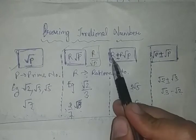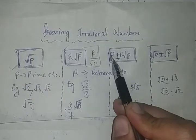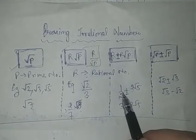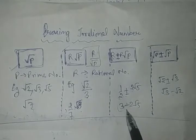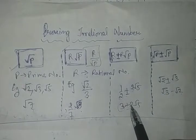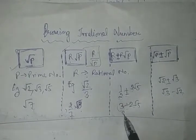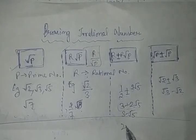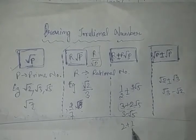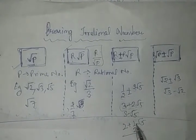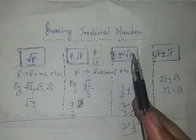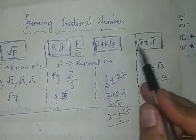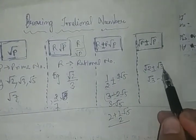Third type: rational plus rational root P — जैसे कोई भी rational number plus minus 2 root 5, या 3 minus root 5, या 2 plus 1 upon 2 root 5 — इस तरह के सभी questions इस type में आ जाएंगे।